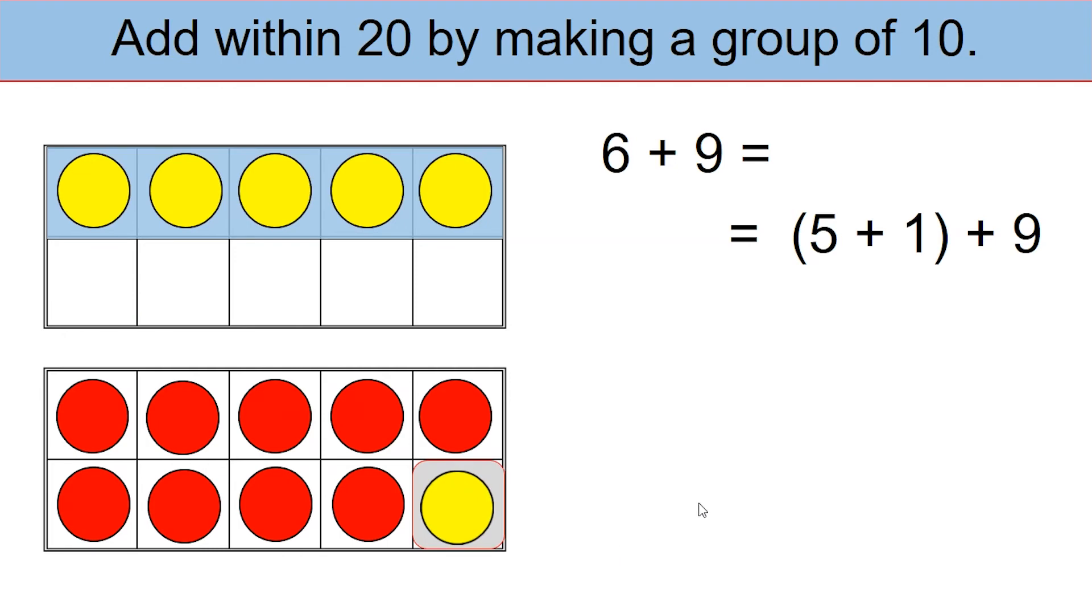Now, as you can see, the number now changed to 5 plus 9 plus 1. So you have a 5 in the first tens frame and 10 on the second tens frame, which totals up to 15.